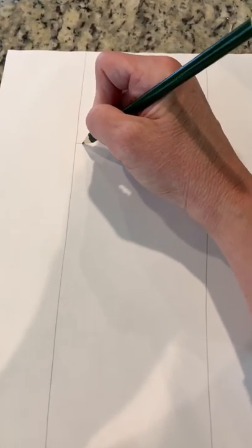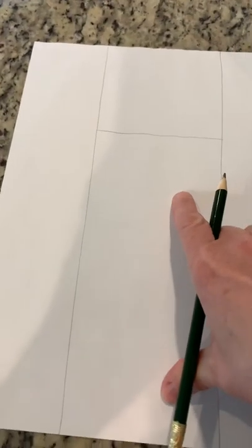Now we need a line across here, a horizontal line that goes all the way across, right like that. So you're forming a rectangle up here and a rectangle down here. In this rectangle, you're gonna make a circle. Take your time.